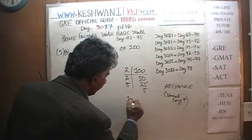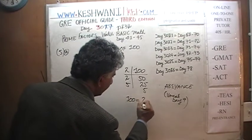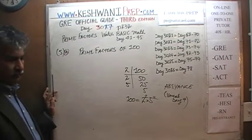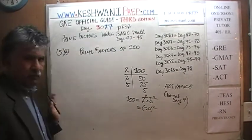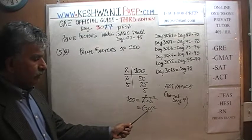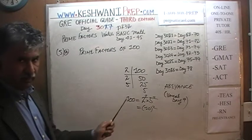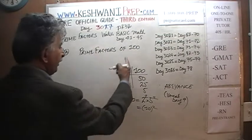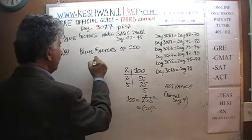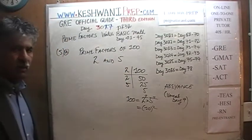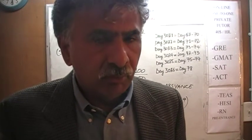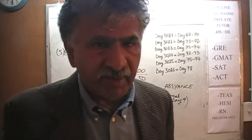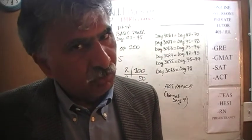So we find that 100 is essentially 2 squared times 5 squared, which makes perfect sense because 2 times 5 is 10 — of course it's just 10 squared. But 10 is not a prime number, so even though 10 is a factor of 100, it is not a prime factor. The prime factors of 100 are just 2 and 5 — those are the only two prime numbers that are also factors of 100.